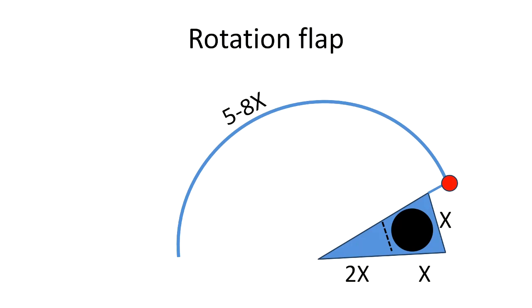So hence what you have to do is extend the arc away from the edge of the triangle so that when now you raise your flap, rotate and advance it, it will fit nicely and you won't have the problem of the flap not reaching and you can close it with no tension.